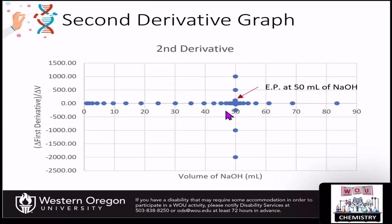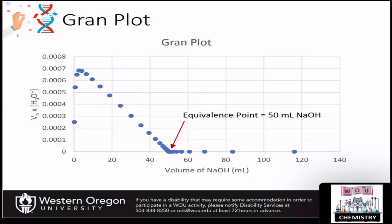Looking at the second derivative plot, you can see the equivalency point will show up in the center, coming off of the central line for your points at the equivalency point. If your first derivative graph will not show this, oftentimes the second derivative graph will. There's one additional way to graph your data to try to see the equivalency point, and that's called a Gran plot. In the Gran plot, you're still plotting the volume of the base on the x-axis, but on the y-axis you're plotting the volume of the base times the concentration of the acid in the solution.